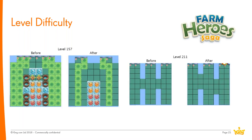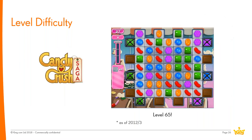Looking at a level editor for Farm Heroes Saga, changes applied to tune difficulty can include removing blockers — such as ice, water wells, and green grass patches on level 157 — or adding game tiles to slightly increase the chance of matches, as seen on level 211. Level 65 in Candy Crush Saga is notoriously difficult and has been debated many times within King, leading to great analysis and thought on how to tackle level difficulty tuning.